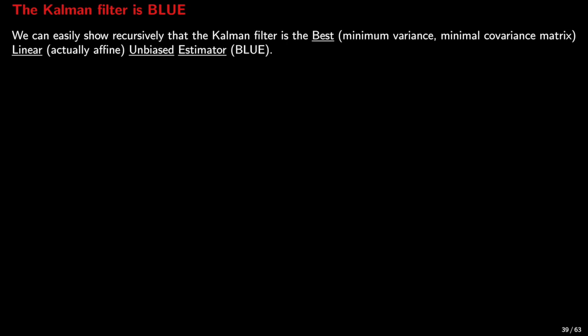Recursively, we can show that the Kalman filter is the best linear — actually affine — unbiased estimator, or BLUE for short. We conclude that if all we can afford is an affine estimator, the Kalman filter is the best choice. In the next video lecture, we will give an alternative interpretation and derivation of the Kalman filter that lends itself to a generalization when the system dynamics become nonlinear or the distributions are not normal — the maximum a posteriori, or MAP, interpretation of the Kalman filter. Many thanks for watching, and goodbye!